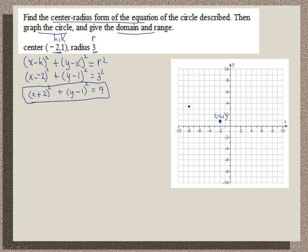A radius of 3 from here, I want to go 3 units to the right. That takes me to the point 1, 1. From the center, I want to go 3 units to the left. That takes me to negative 5, 1.